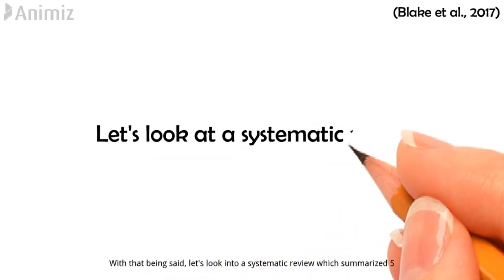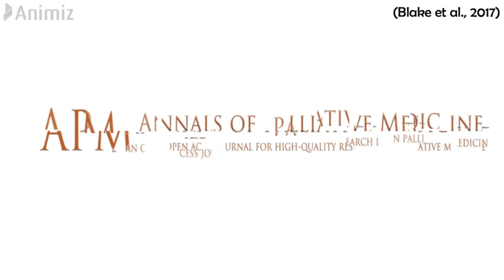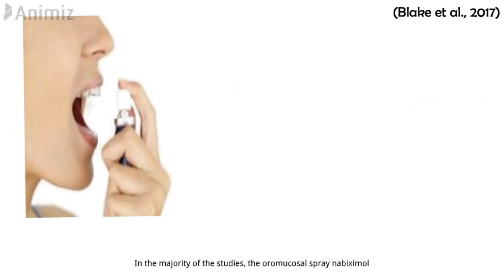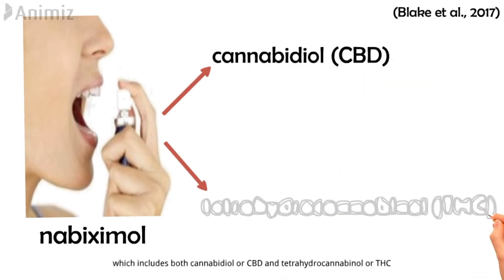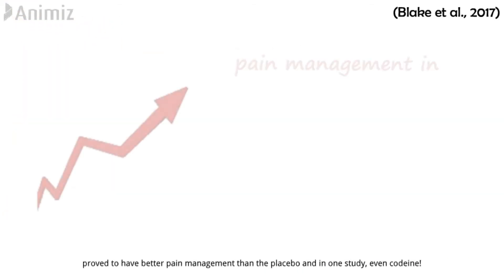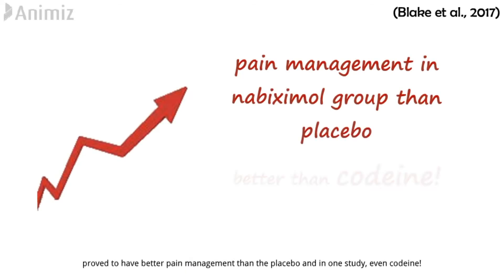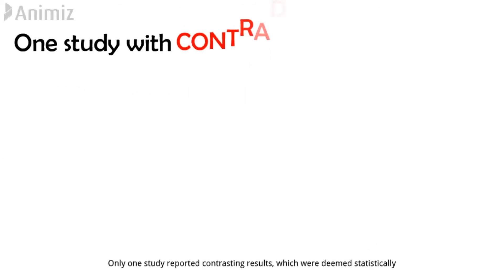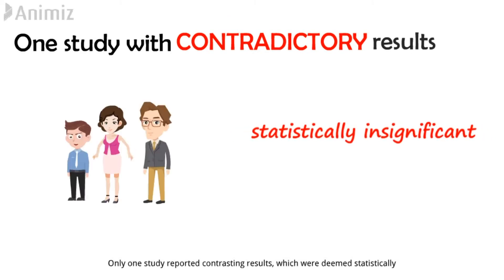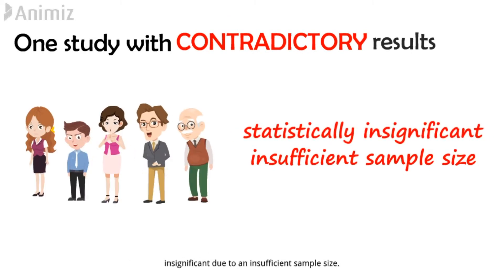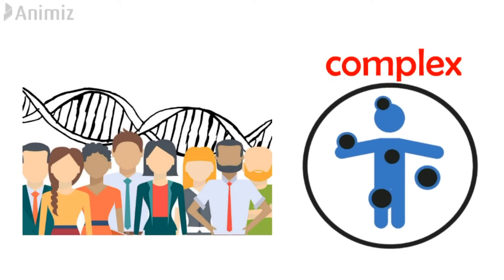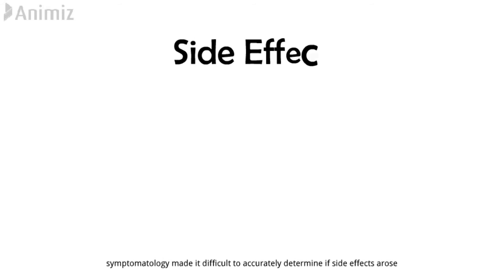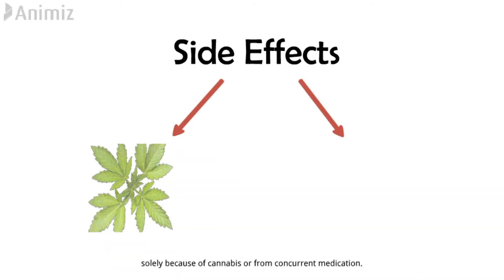With that being said, let's look into a systematic review which summarized five primary research papers on cannabis treatment in patients. In the majority of the studies, the oral mucosal spray Nabiximols, which includes both cannabidiol (CBD) and tetrahydrocannabinol (THC), proved to have better pain management than the placebo, and in one study even codeine. Only one study reported contrasting results, which were deemed statistically insignificant due to an insufficient sample size. The review did highlight how interpatient variability, along with complex symptomology, made it difficult to accurately determine if side effects arose solely because of cannabis or from concurrent medication.